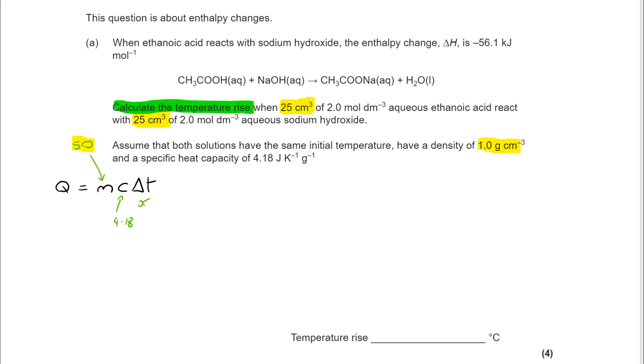This is an area that people sometimes get confused on, but we've got 25 cm cubed of each of the two solutions. So that's a total volume of 50. And as the question says, we assume a density of one. Don't always expect to be told the density. Now, we have to work out Q.